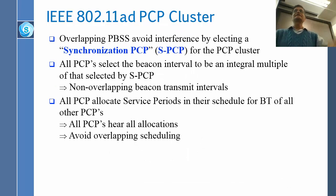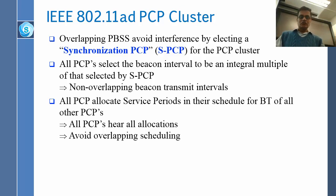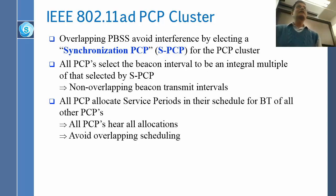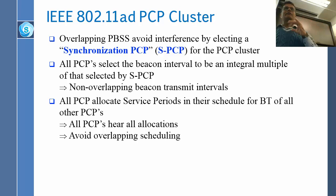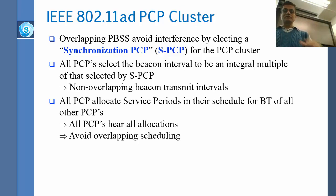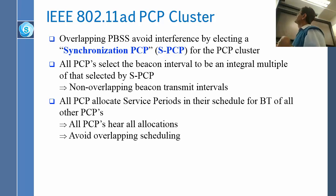What if there are many PBSS in the same area? They overlap — this is called a cluster. One little network in this room and another little network in this room will get together and say, we have to use this spectrum together, so we are a cluster. In the cluster, one PCP will try to do things so that it does not affect other PCPs, and other PCPs will try not to disturb each other's networks. Overlapping PBSSs avoid interference by electing a S-PCP — a synchronization PCP.